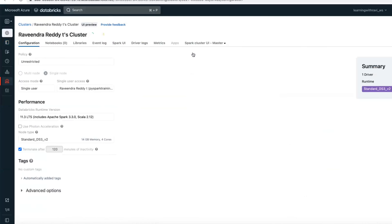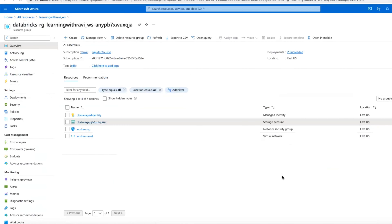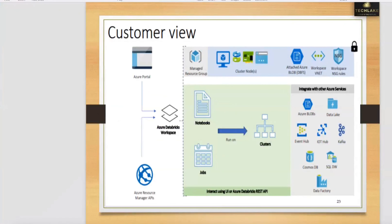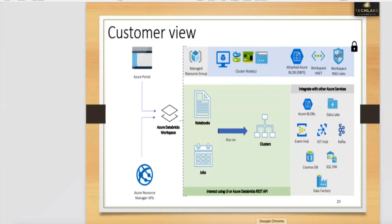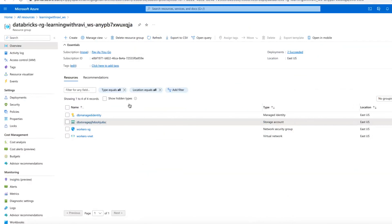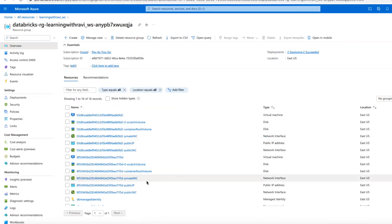Now if you create a cluster, back-end it is going to create additional resources. These resources are for the workspace; these additional resources are for the cluster. Whenever you create a cluster, back-end: one virtual machine, two disks, public network, private network, IP address, and network interface — with public and private network interfaces and IP addresses.